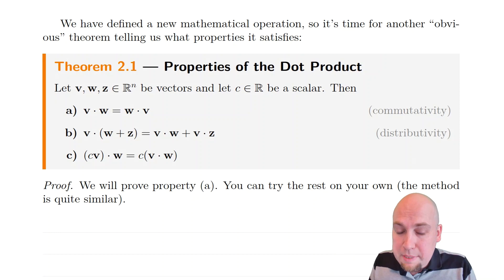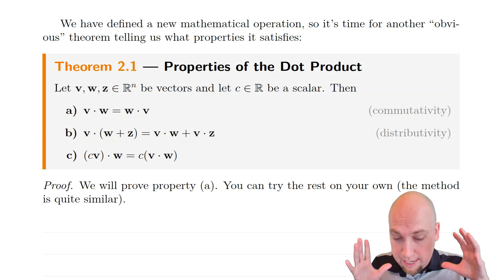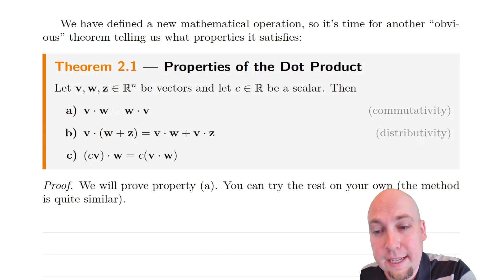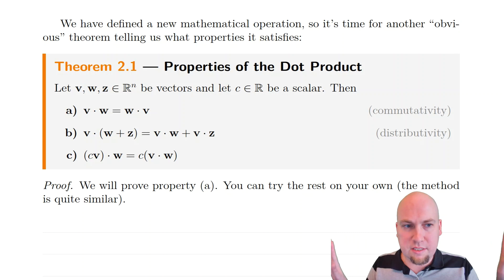We know how to compute dot products now. Whenever we introduce a new operation in this course, we prove a theorem providing its nice properties. Here is that theorem for the dot product. The first property is commutativity: it doesn't matter what order you do the dot product in. If you've got two vectors v and w, then v dot w gives the same thing as w dot v — you can swap them and it doesn't change anything, just like commutativity for vector addition.